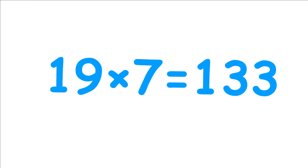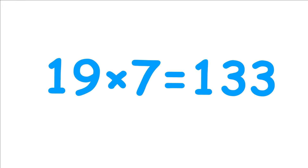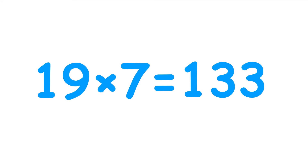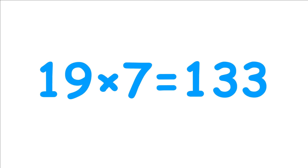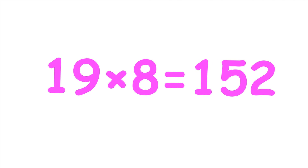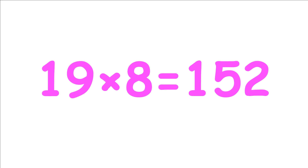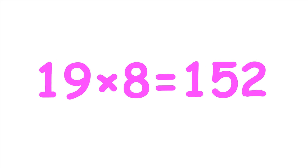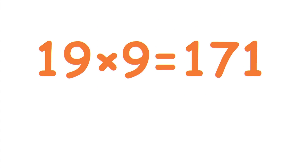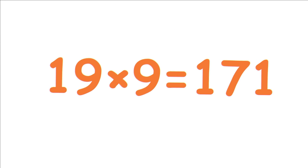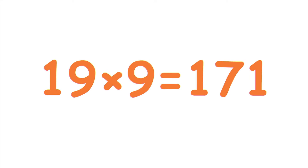19 multiplied by 7 equals 133. 19 multiplied by 8 equals 152. 19 multiplied by 9 equals 171.